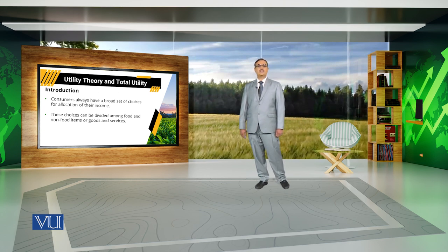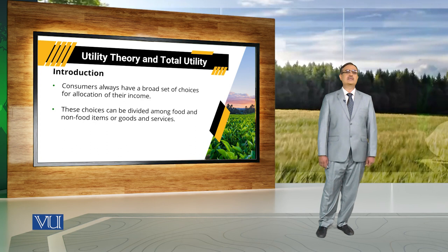For example, if we make a discussion with reference to food items, it might include fruits, vegetables, meat, and many other items consumed by a particular consumer to get satisfaction. When we discuss non-food items, it includes clothes, shoes, and many other things. If we differentiate between goods and services, goods are usually tangible items while services are intangible — activities performed by someone else for the benefit of the consumer.